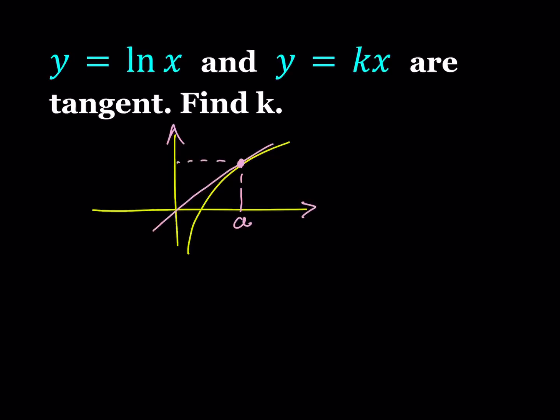The x coordinate of the point of tangency is going to be called a, and what about the y value? The y value can be written in two ways. If you substitute into the first one, you get that the y value is ln a. If you use the second one, you get ka. So in other words, ka equals ln a. Since we're trying to find the value of k, k equals ln a over a.